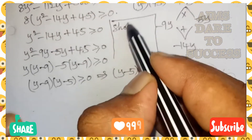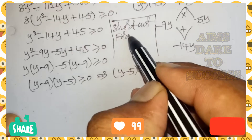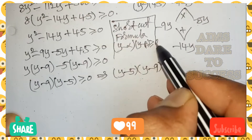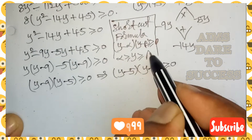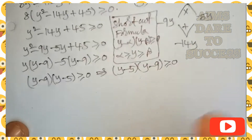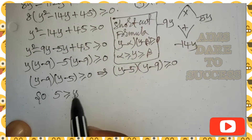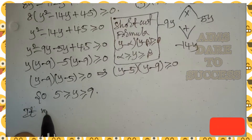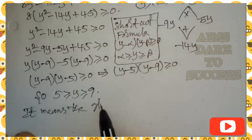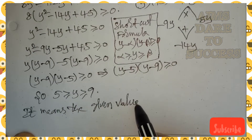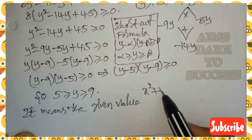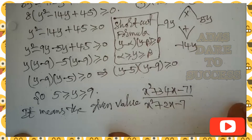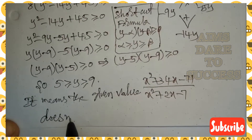My dear students, now I am writing the shortcut formula, which we have discussed in previous questions. The shortcut formula is: if (y − α)(y − β) ≥ 0, it means y ≤ α or y ≥ β, where α is the small value and β is the big value. Here small value α = 5, big value β = 9. So y ≤ 5 or y ≥ 9 — meaning the value goes from big number to small number — it does not lie between 5 and 9. Therefore the given expression (x² + 34x − 71) / (x² + 2x − 7) does not lie between 5 and 9.